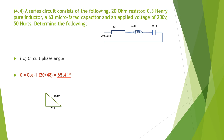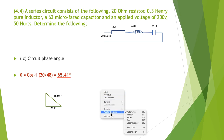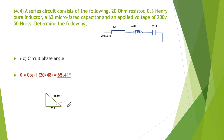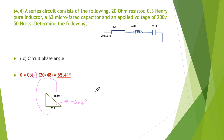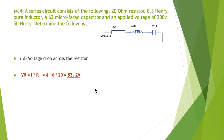C, phase angle: we use cos to the minus one of the adjacent divided by the hypotenuse — 20 divided by 48.07 — giving us an angle of 65.41 degrees. D, voltage drop across the resistor: using Ohm's law with 4.16 amps and 20 ohms, the voltage across the resistor is 83.2 volts.